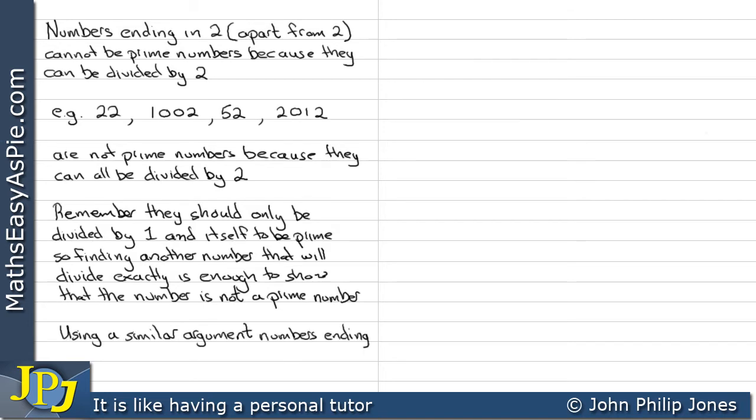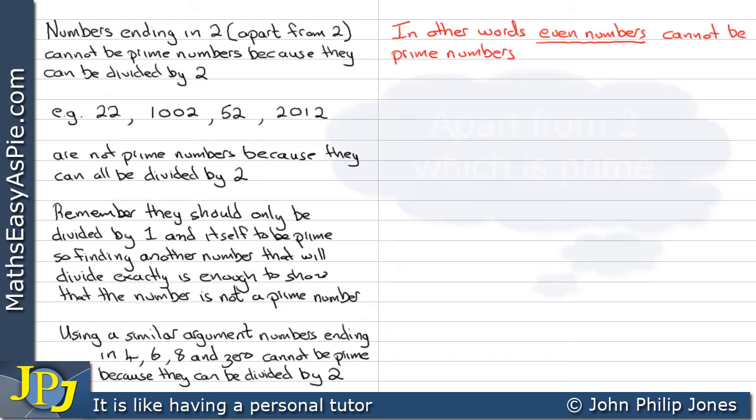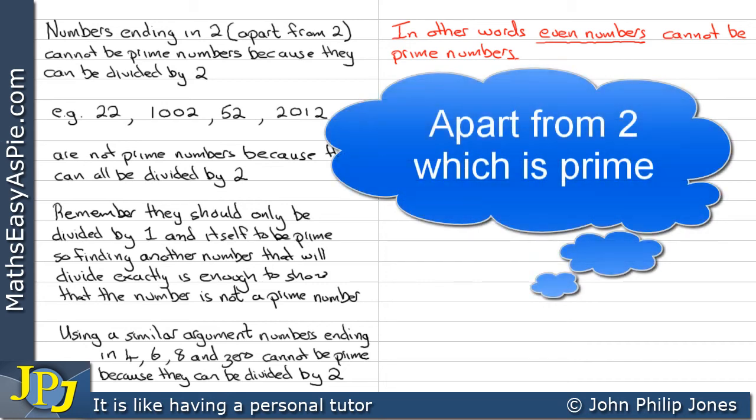Using a similar argument, numbers ending in 4, 6, 8 and 0 cannot be prime because they can be divided by 2. In other words, even numbers cannot be prime numbers apart from 2.